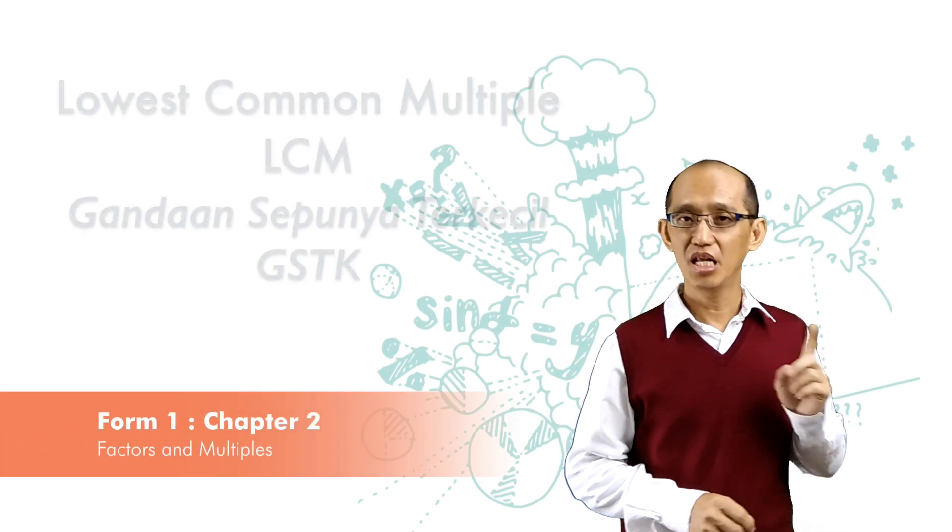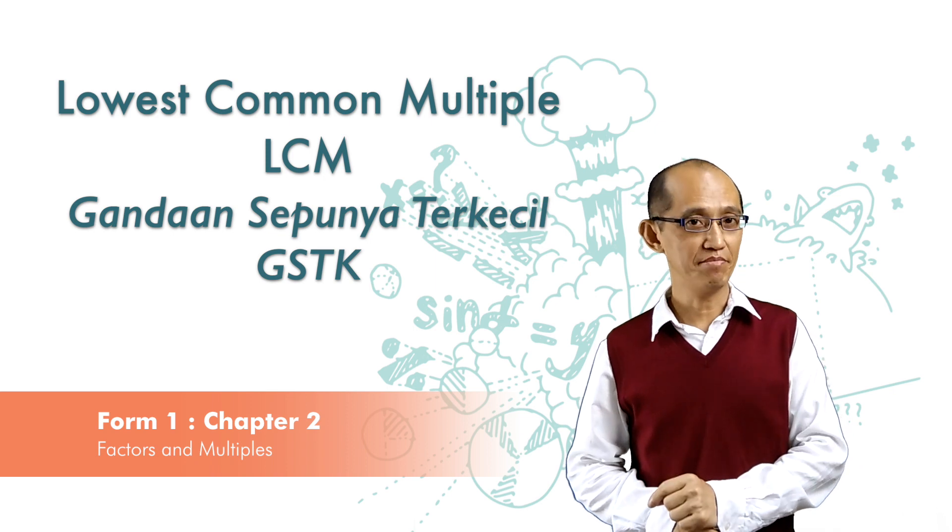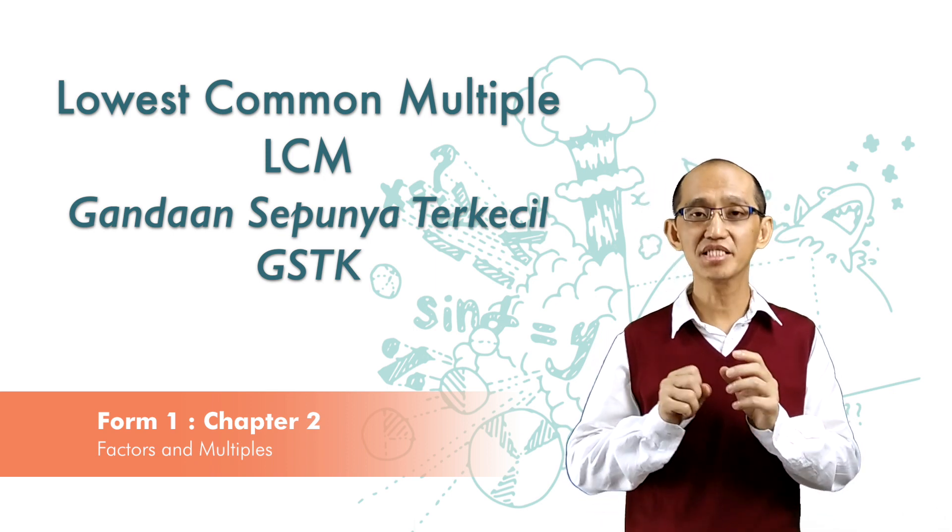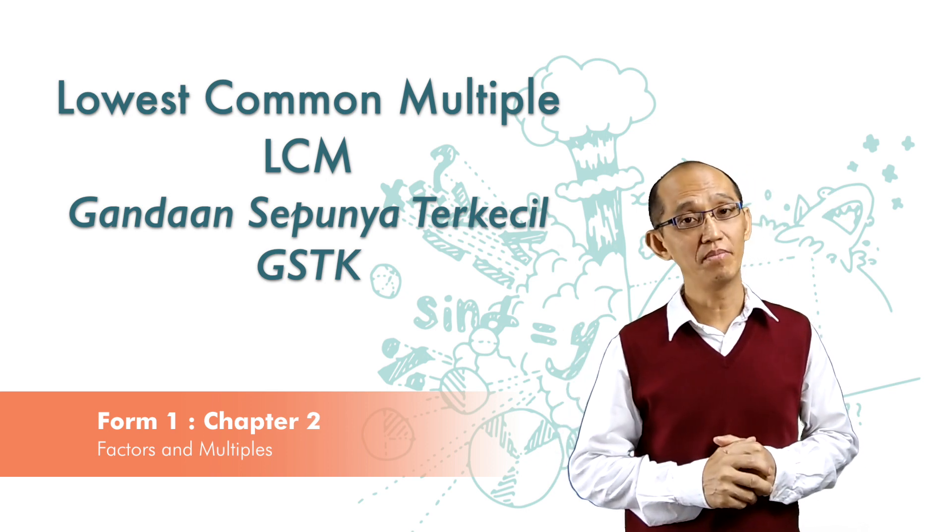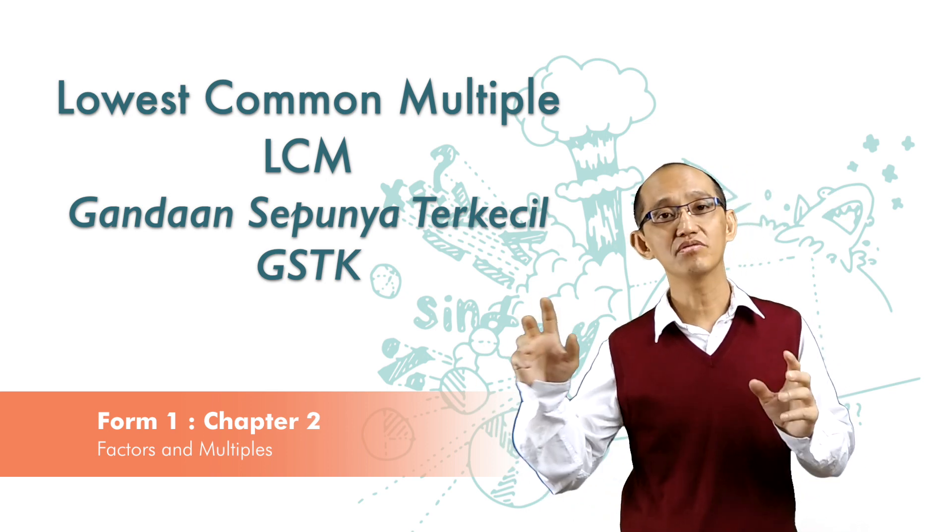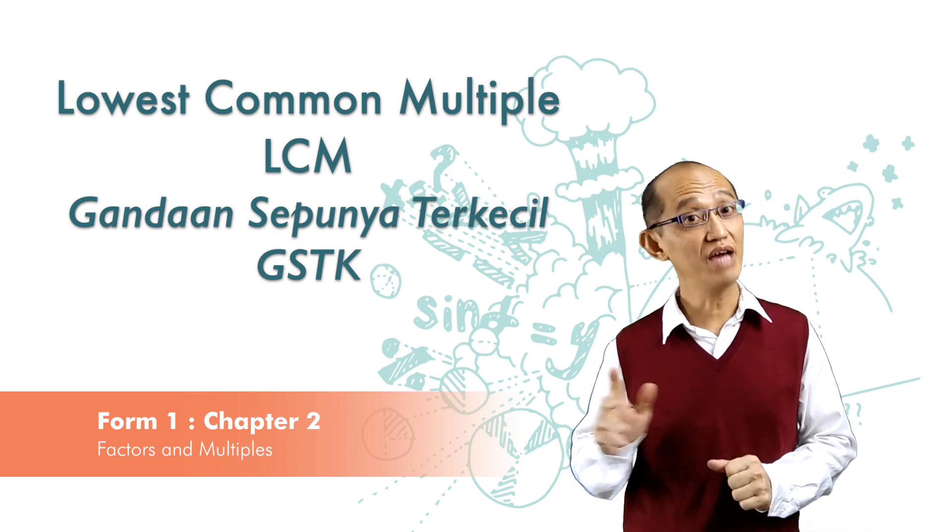We have just learned how to find common multiples. The lowest common multiple (LCM) is simply the smallest number of the multiples. The first method to find the lowest common multiple is to list out the multiples.